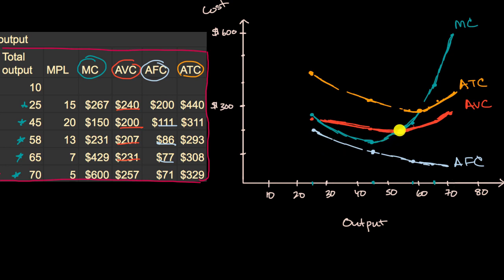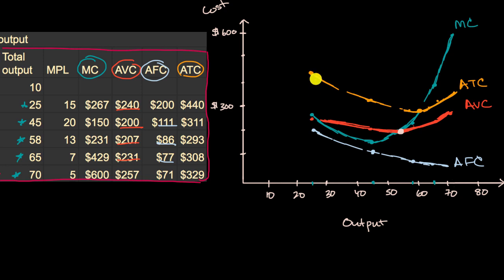We talked about where the marginal cost curve intersects the average variable cost — that's where the average variable cost goes from trending down to trending up, so it hits that minimum point. The same thing happens at average total cost: it hits the bottom of that U. And the difference you see between your average total cost and your average variable cost is your average fixed cost.